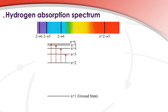Here we have the hydrogen absorption spectrum, and it can be described as black lines on a coloured background. Here we have the energy levels in the hydrogen atom, starting with n equals 1, which we call the ground state, then going up to n equals 2, 3, 4, 5, and 6. This first black line corresponds to the energy absorbed when the electron transitions from the n equals 2 to the n equals 3 energy level.